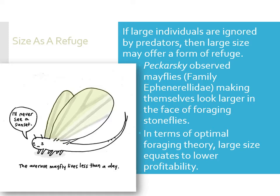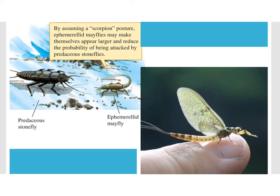This little sad stonefly or mayfly only lives less than a day — they emerge from the water, mate, and lay their eggs in the course of one day flying in the air. These little tiny guys on a fingernail here — little mayflies — when the stonefly comes saying 'I'm going to eat you,' the mayfly says 'No, you're not. I'm a scorpion.' And it makes a scorpion posture. The stonefly says 'Oh, nevermind,' and goes away and leaves them alone.